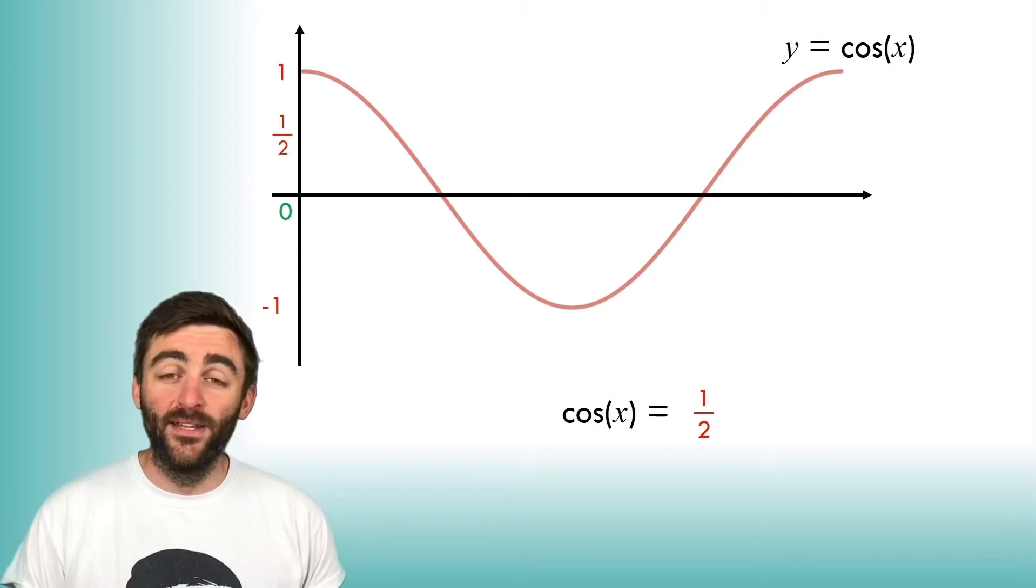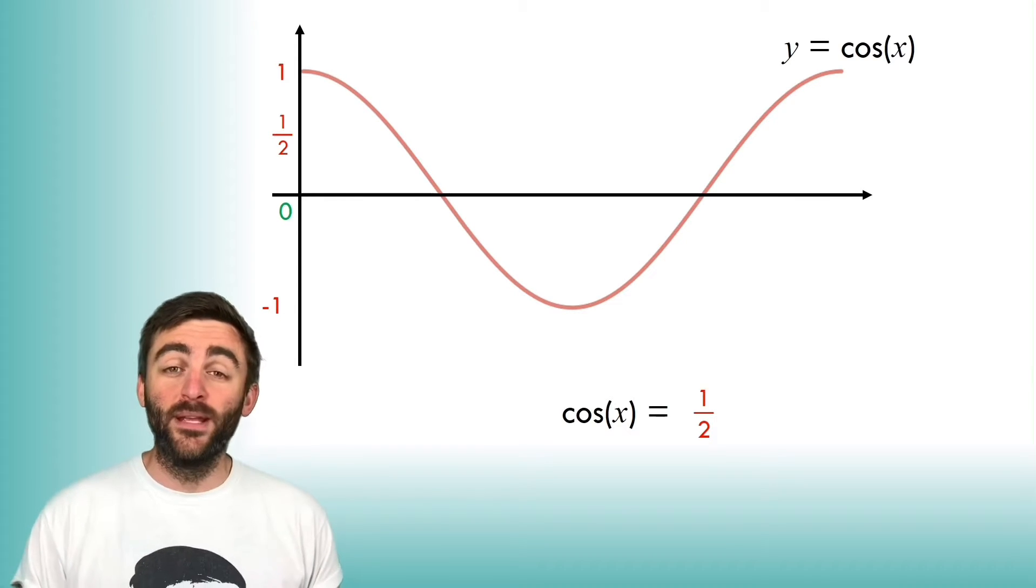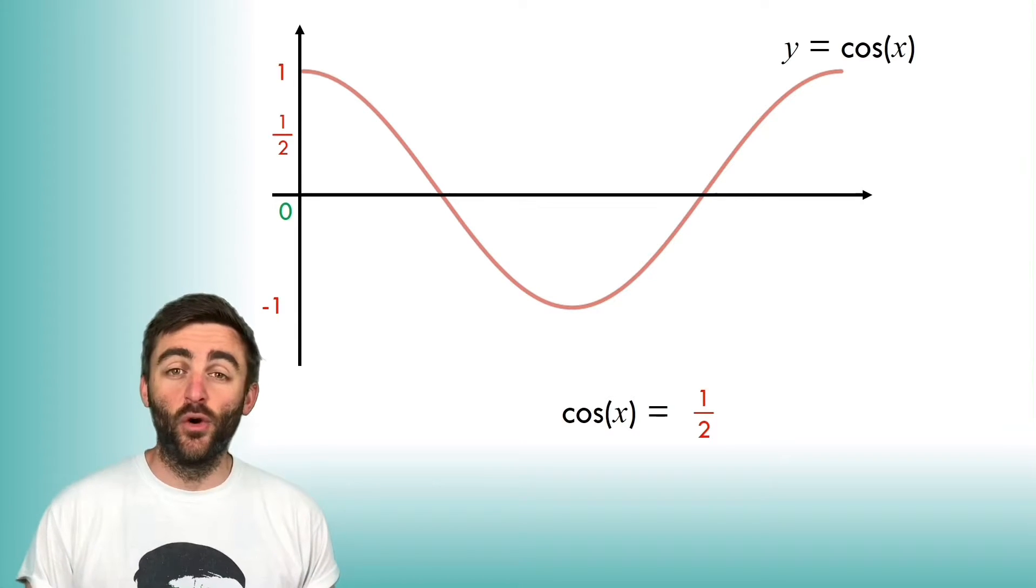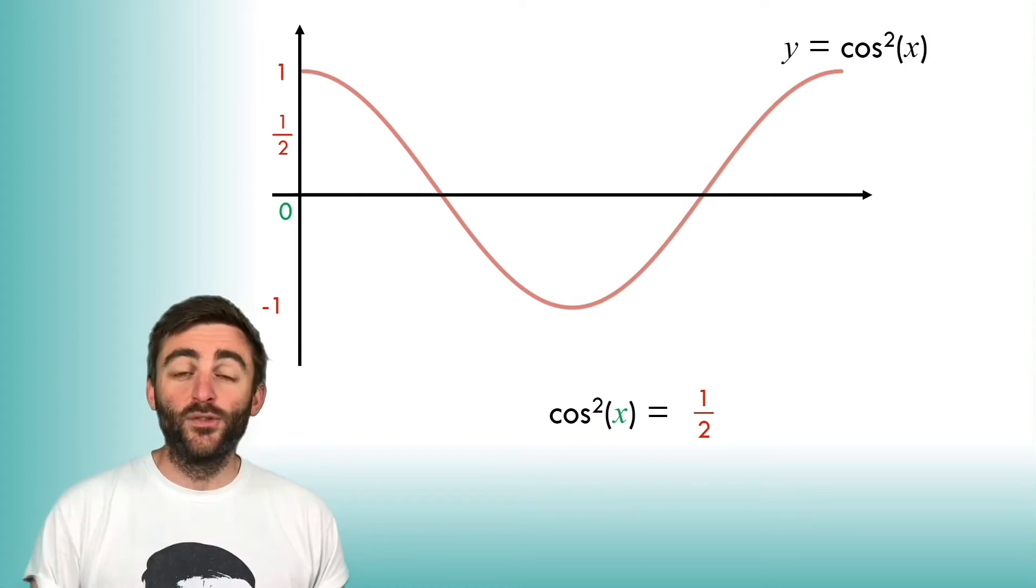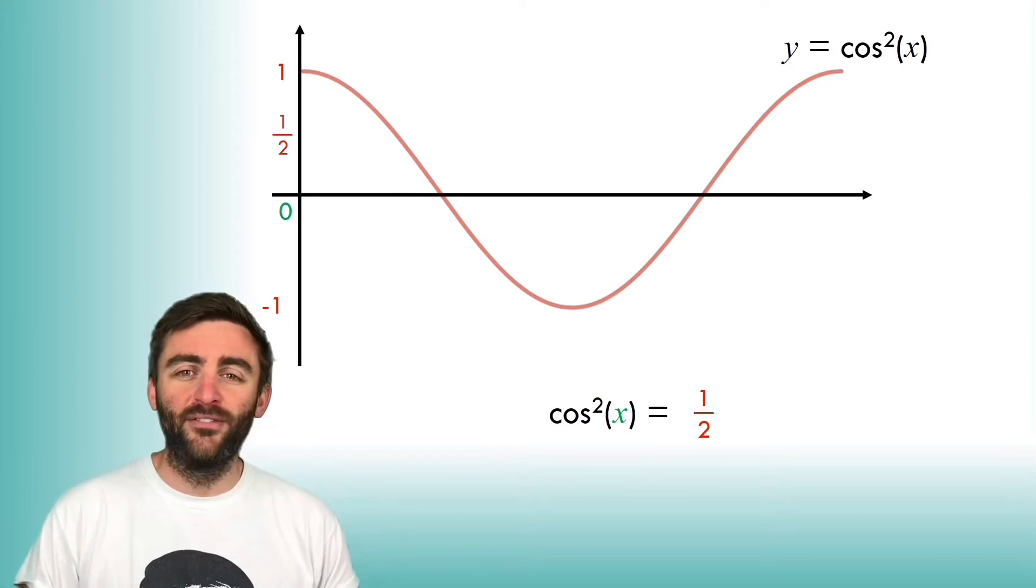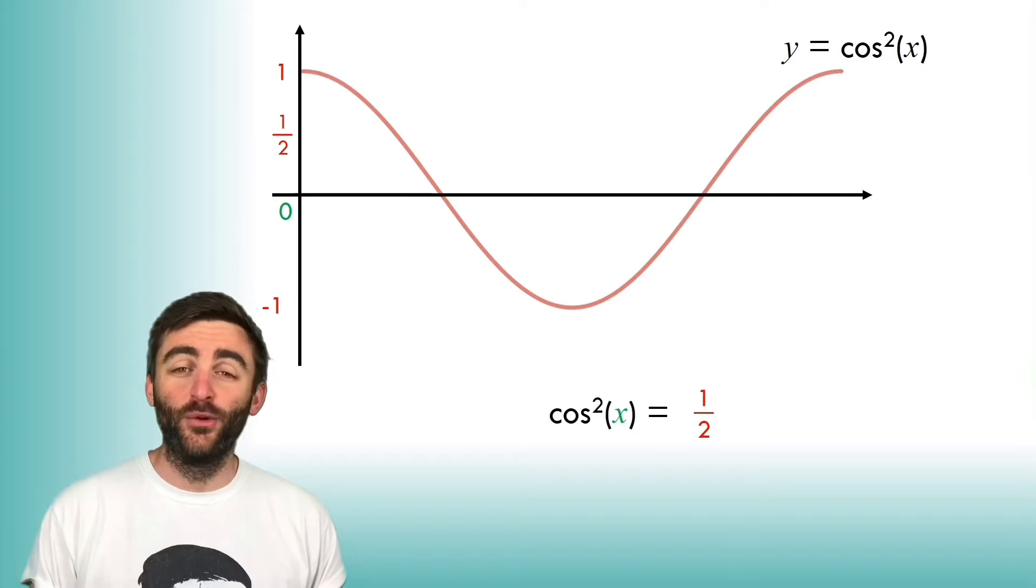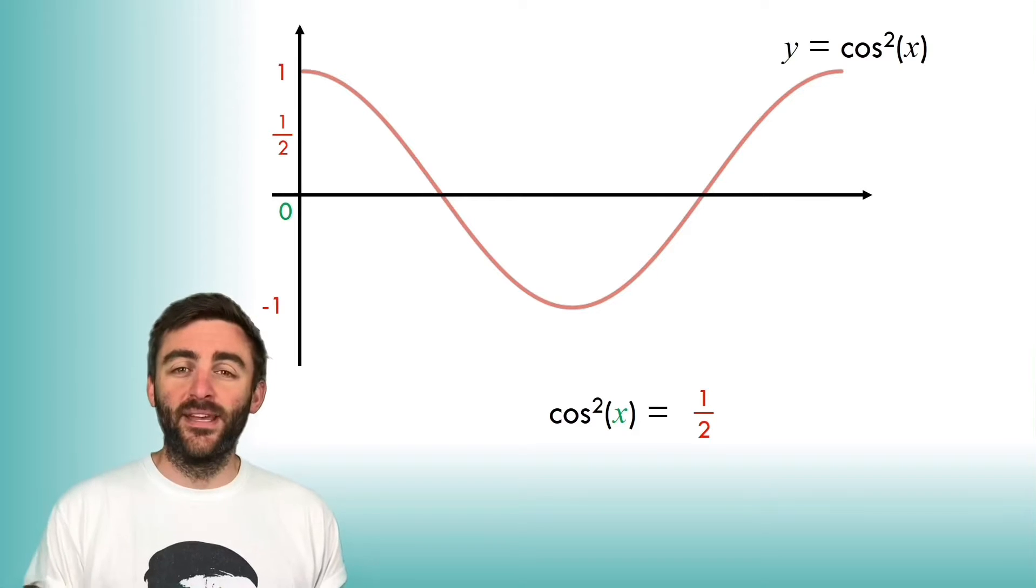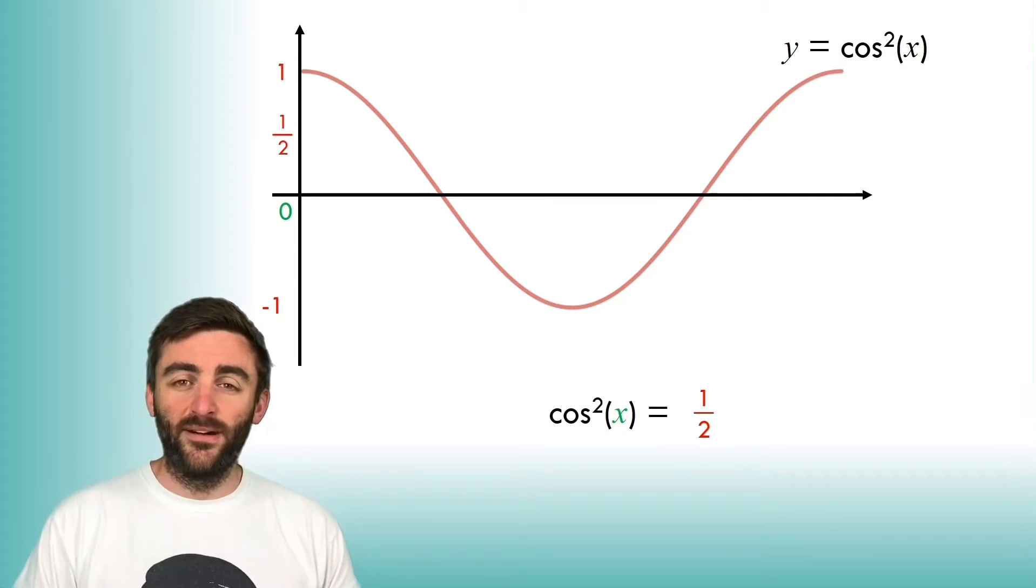Let's consider cos x equals a half graph again and think about what happens if I square the cos term. Remember, convention dictates that when we square a trig term, we write the squared straight after the trigonometric function. So cos²x equals a half. What happens when we change a graph from being y equals cos x to y equals cos²x? Well, the squared is outside the bracket, that means it's affecting the y coordinates.